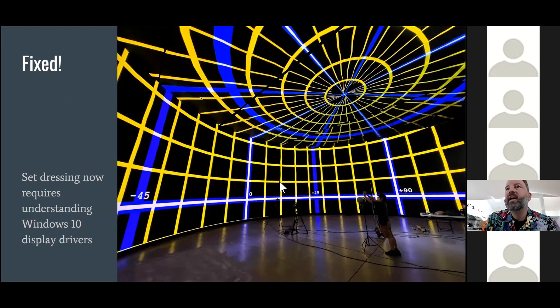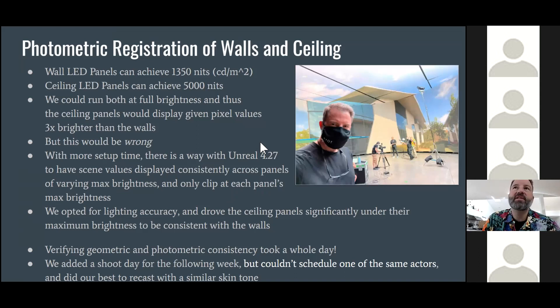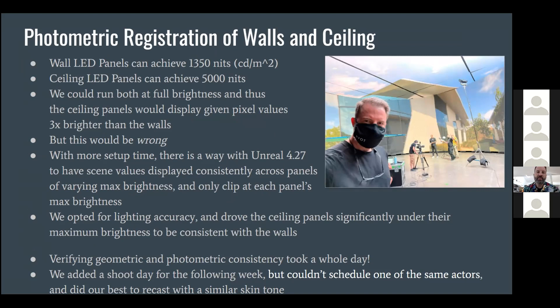In many virtual production stages, the ceiling can go brighter than the walls — done with coarser, brighter panels that can reach 5,000 to 6,000 nits, while the walls could go to about 1,350 nits. We would have loved to use that full range for brighter ceiling environments, but the only easy approach would have made the ceiling arbitrarily three or four times brighter than the walls, which wouldn't make sense for consistent pixel values. So for this test, we ran the ceilings dimmer to match the walls at about 1,350 nits. In the future, with Unreal Engine, we could probably take advantage of that extra ceiling range without creating a bad seam.